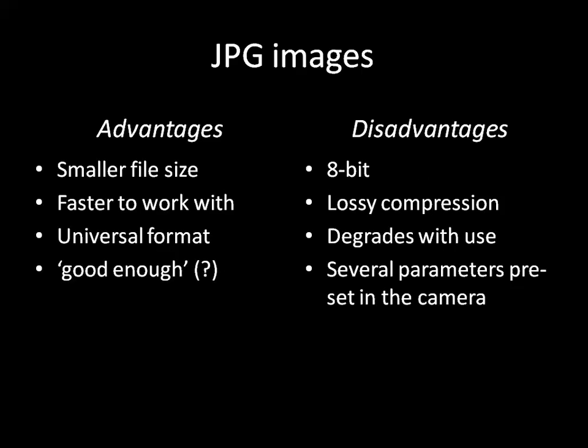All digital cameras can produce JPEG images from the RAW data. This is what results when the RAW data is run through the camera software to assign a white balance, contrast, and other image effects, which is then compressed and saved as a JPEG file. The advantages of a JPEG are smaller file size, they're faster to work with, they're a universal format, and for some work they're good enough.